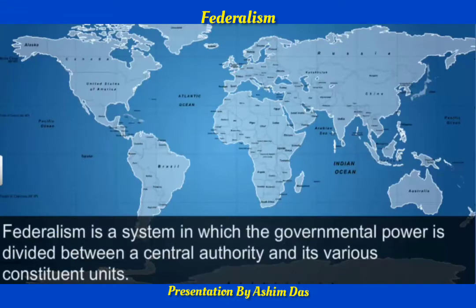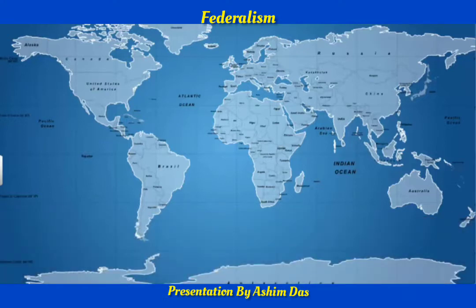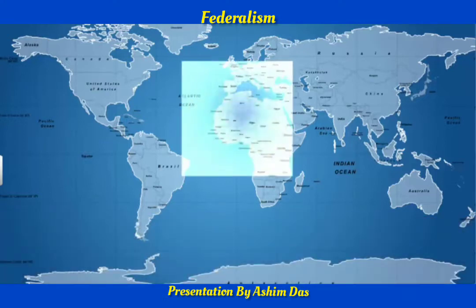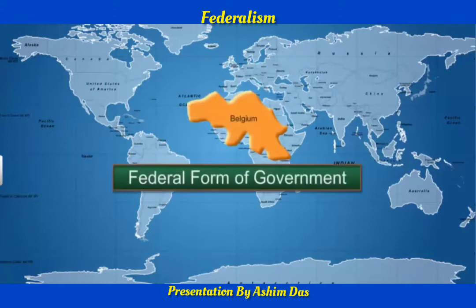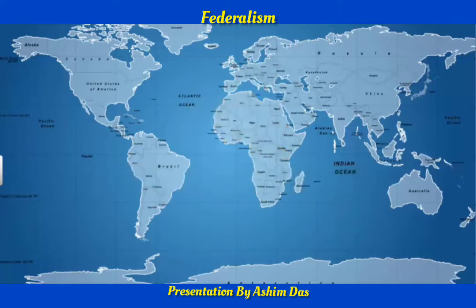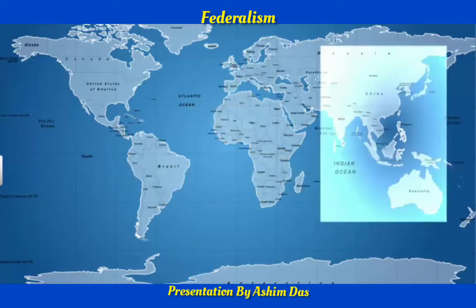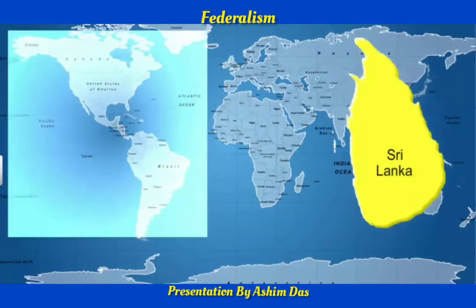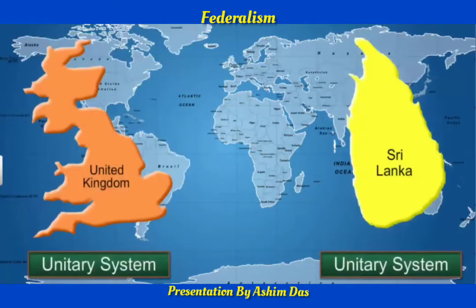Federalism is a system in which governmental power is divided between a central authority and its various constituent units. For example, Belgium has a federal form of government, whereas countries like Sri Lanka and the UK have a unitary system of government.